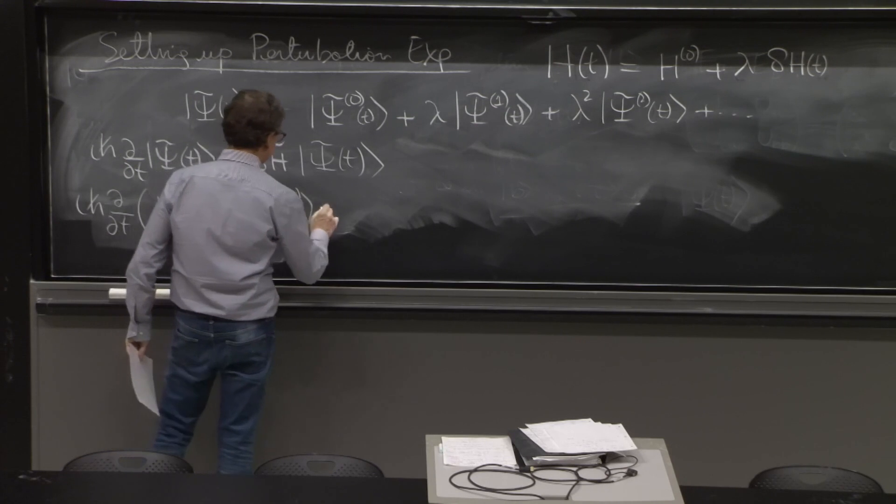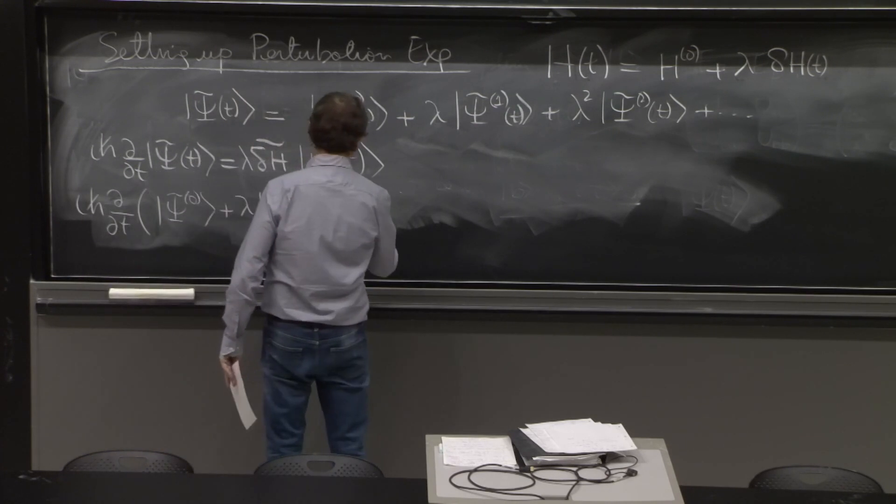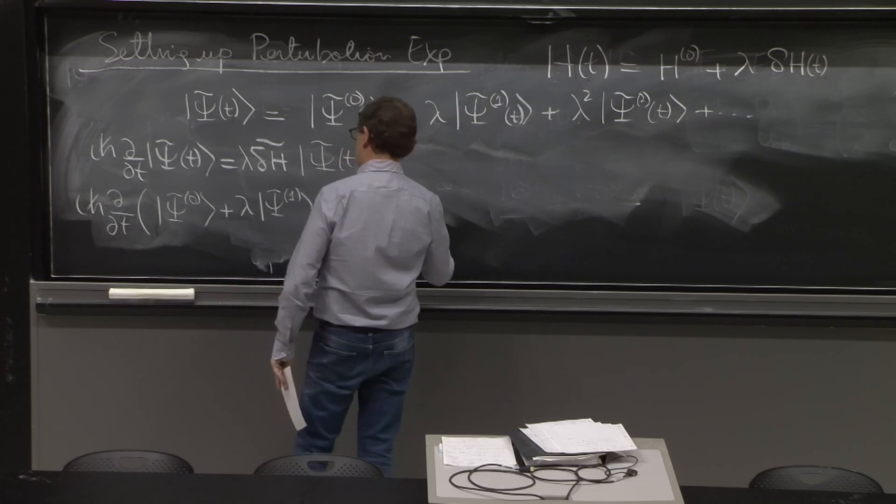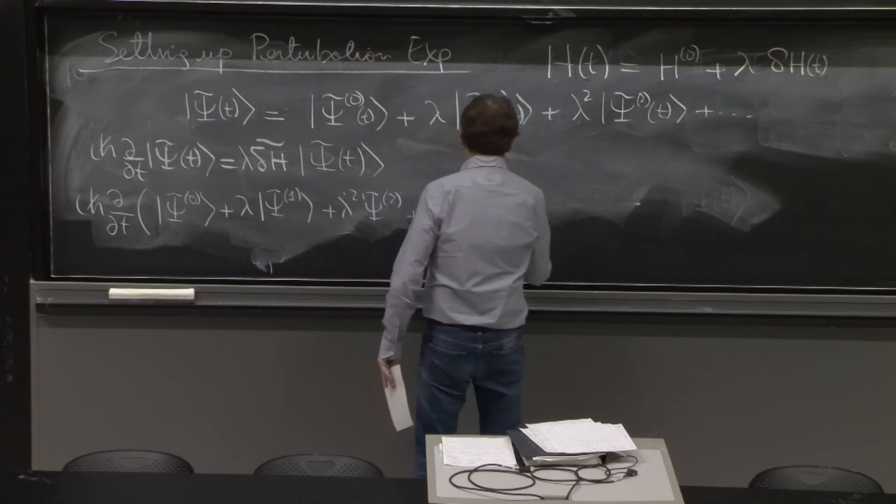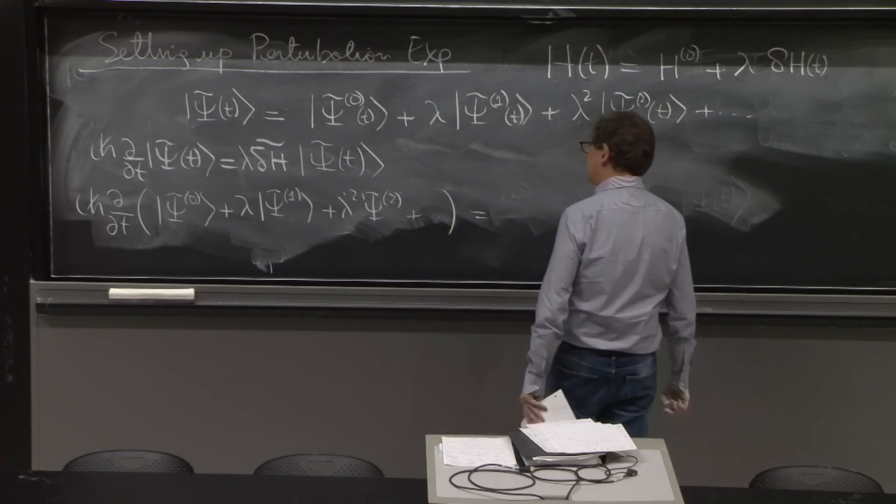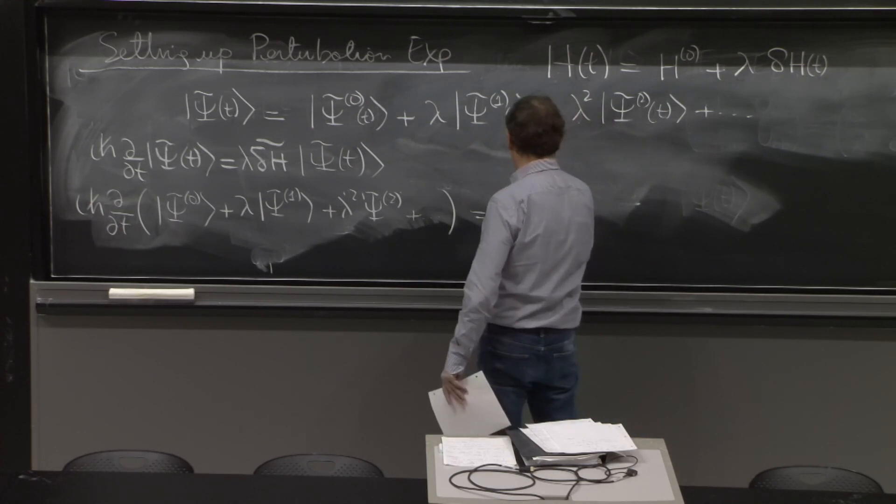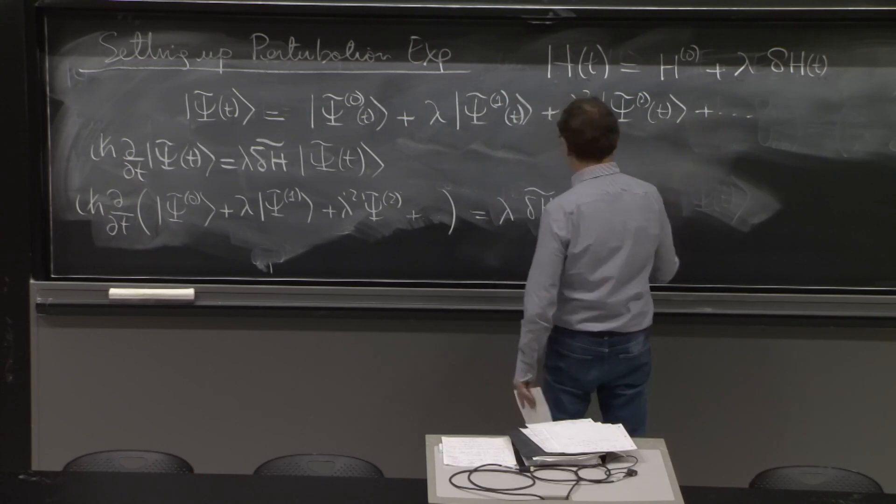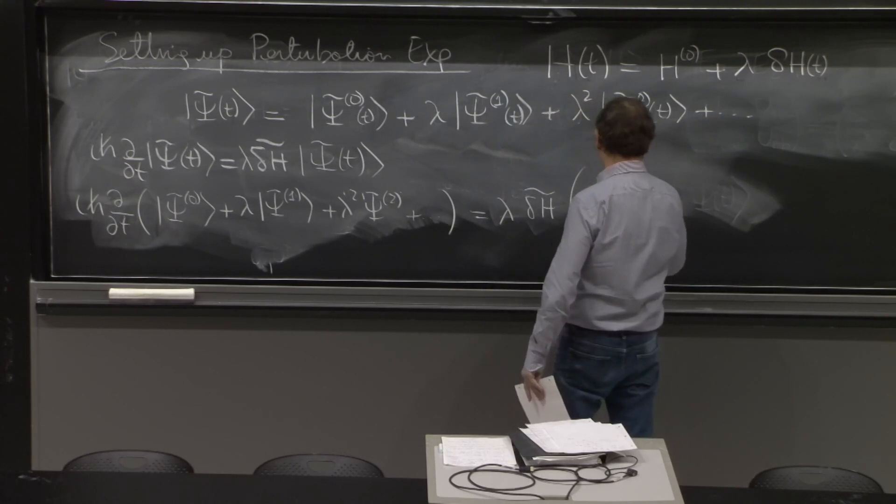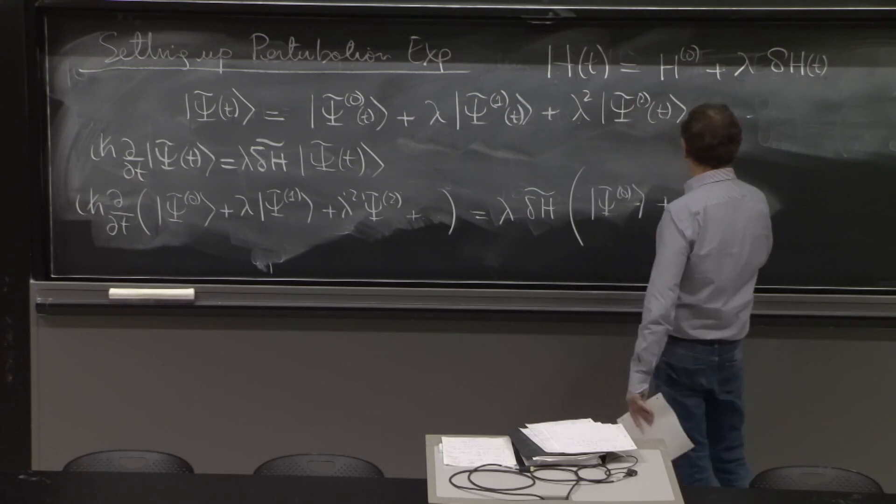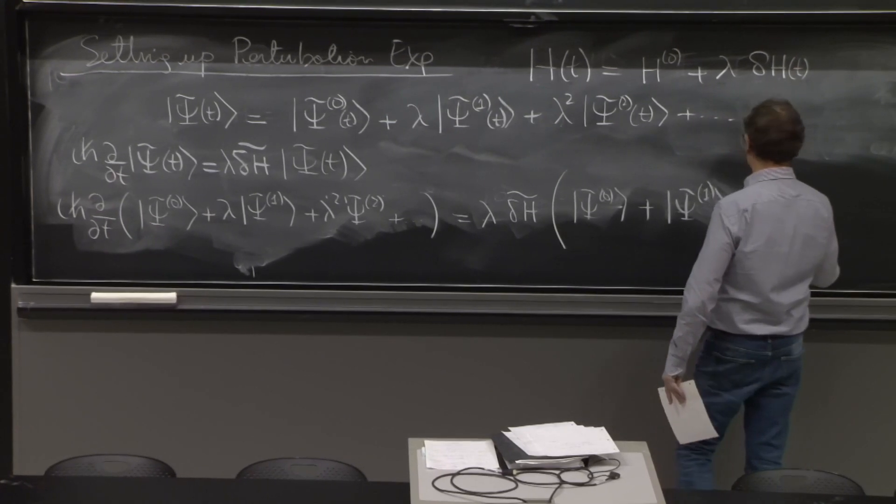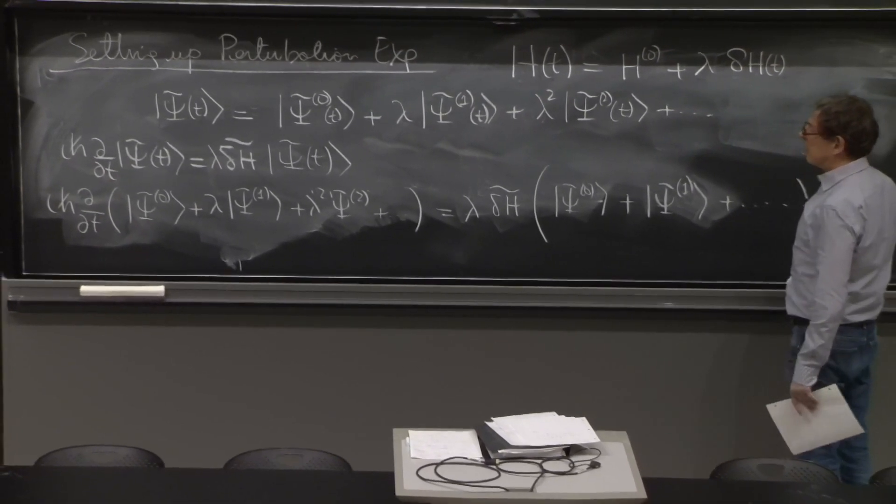d dt of psi 0. Let me not put the time dependence in the kets. So this is psi 1 lambda squared psi 2. And this is equal to lambda delta h bar psi tilde again. So it's psi 0 plus psi 1 plus those terms.